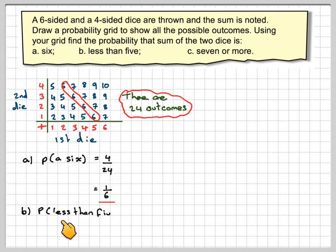Part B: probability of less than five. Less than five means we don't actually include five, so it will be all these here. That's going to be one, two, three, four, five, six out of twenty-four, and that cancels down to one-quarter.